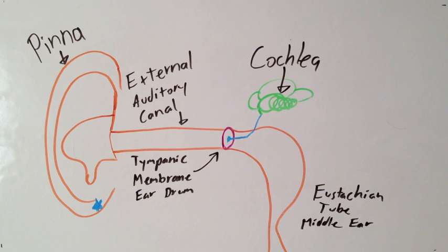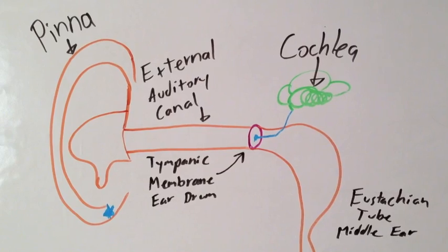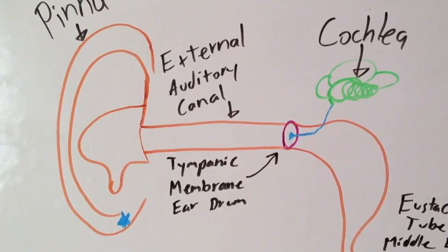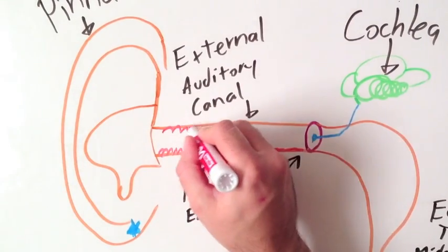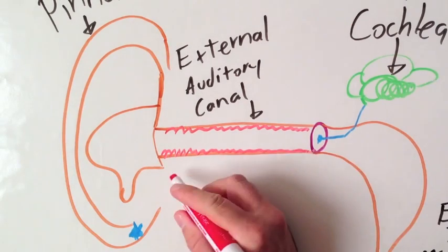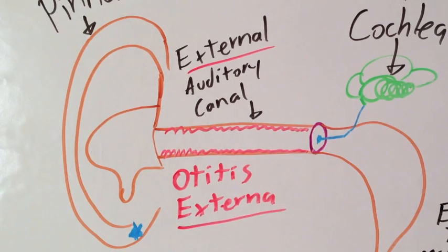Now we're ready to talk about ear infections. A lot of people don't know this, but there are different types of ear infections. The first ear infection we're going to talk about is called swimmer's ear. But I personally don't like the name swimmer's ear, because you don't have to go swimming to get it. Bacteria like to grow in warm, moist places, so the external auditory canal is a perfect place for bacteria to start to grow. So really anyone can develop swimmer's ear.